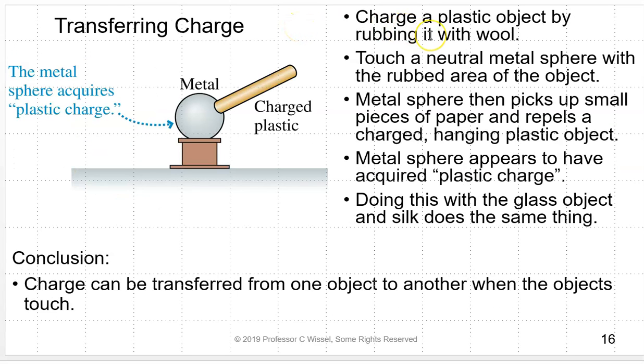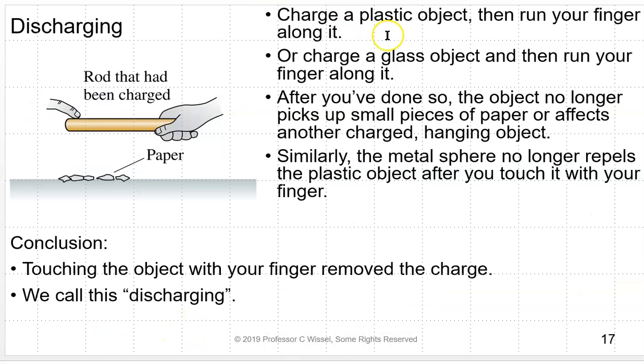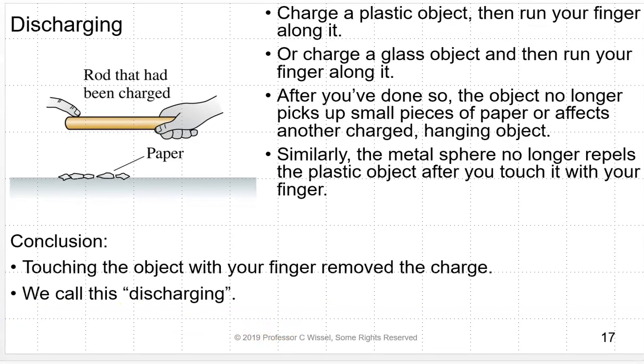You can transfer charge. Charge a plastic object by rubbing it with wool, touch a neutral sphere with the rubbed area of the object. The metal sphere will then pick up small pieces of paper and repel the charged hanging plastic object. The metal sphere appears to have acquired a plastic charge. Doing this with the glass object and silk does the same thing. So charge can be transferred from one object to another when the objects touch. If you charge a plastic or glass object and then run your finger along it, after you've done so, the object will no longer pick up small pieces of paper or affect other charged hanging objects. Similarly, the metal sphere will no longer repel the plastic object if you touch it with your finger. Touching the object with your finger removes the charge. We call this discharging. We also call it grounding.